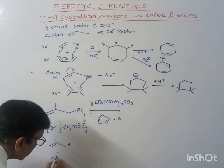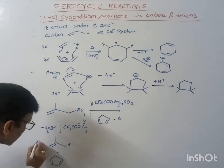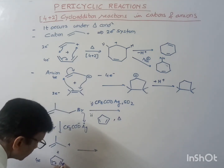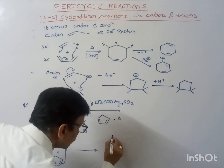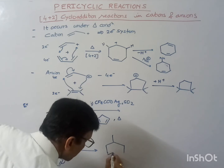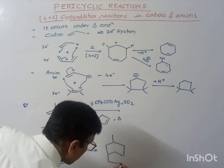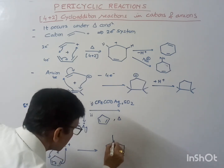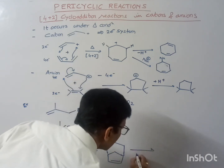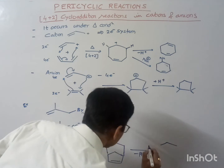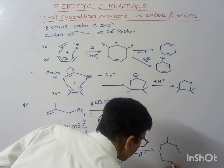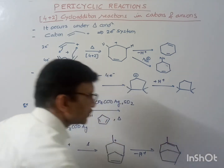In presence of the 4-electron system, this is our 2-electron cation system and this is the 4-electron system. And finally what we will get — we are getting a cyclic product. After the removal of H+, we are getting this product, which will be the final product.